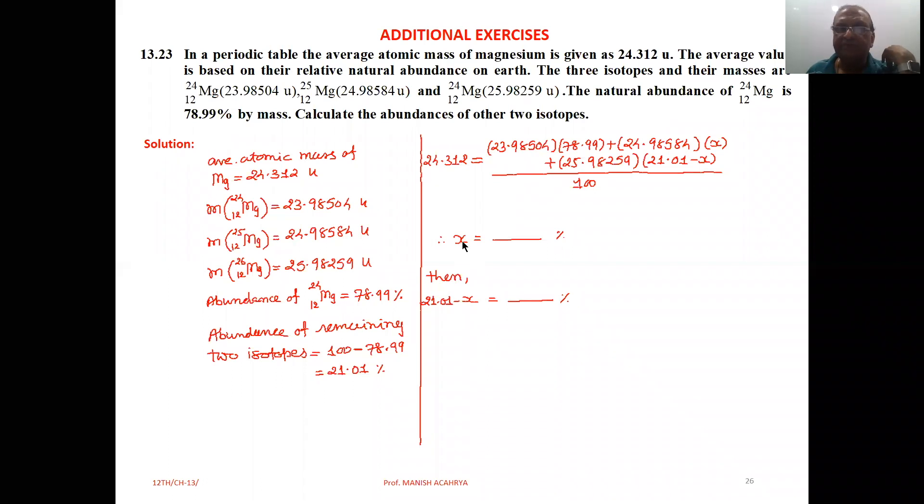The 12mg25 abundance, then calculate 21.01 minus x, you will get the abundance of 12mg26.